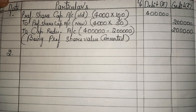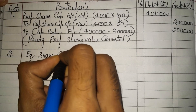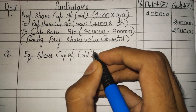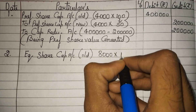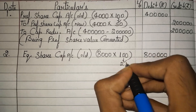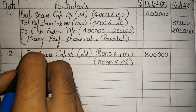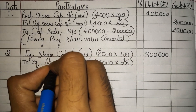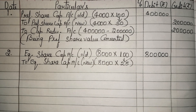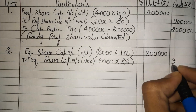The second journal entry is for equity shares. Equity share capital account — the old value is 8000 equity shares of rupees 100 each, which is 8 lakh. Now this 100 rupees is being converted to 25 rupees. So the same 8000 shares are converted to 25 rupees each — this is the new equity share capital account. So 8000 into 25 equals 2 lakh.